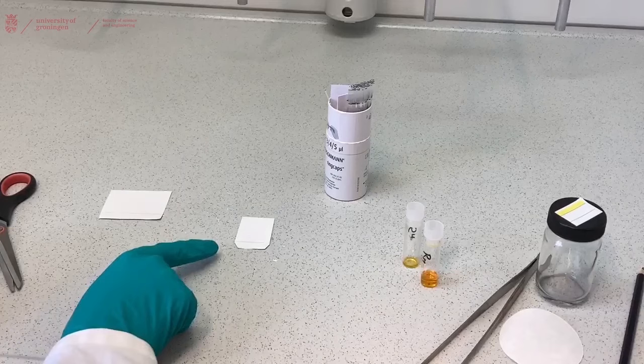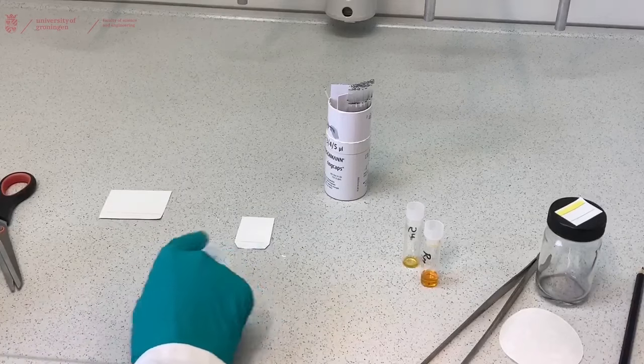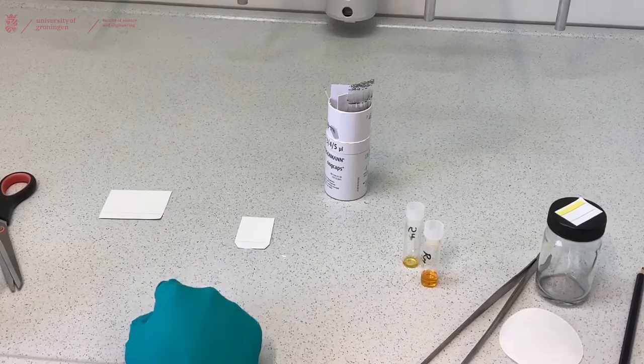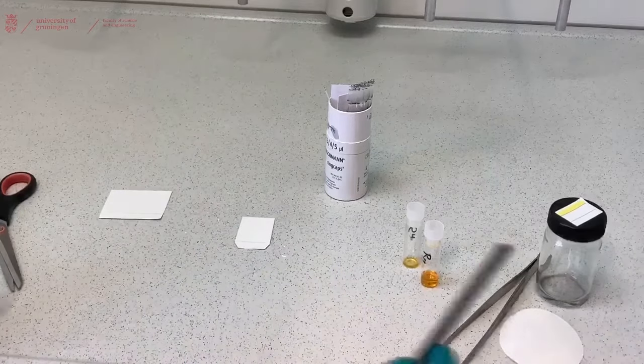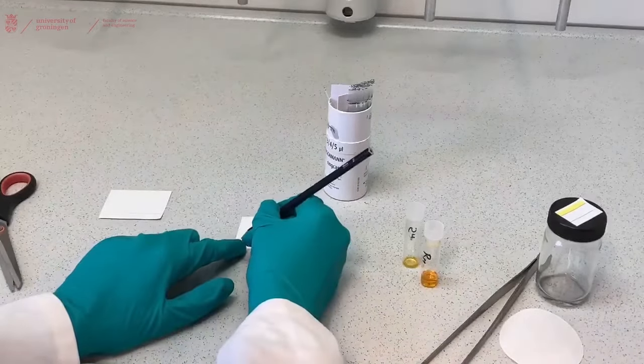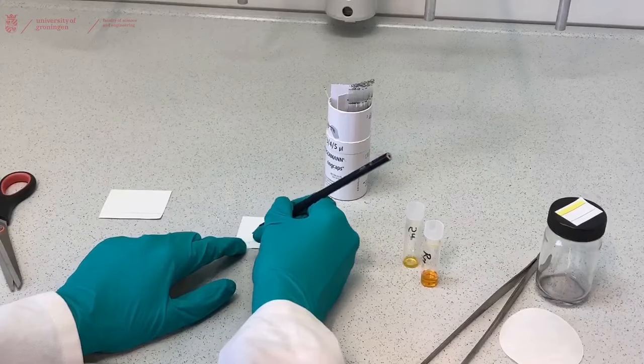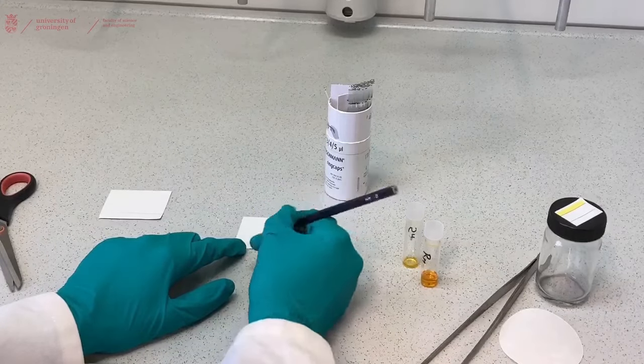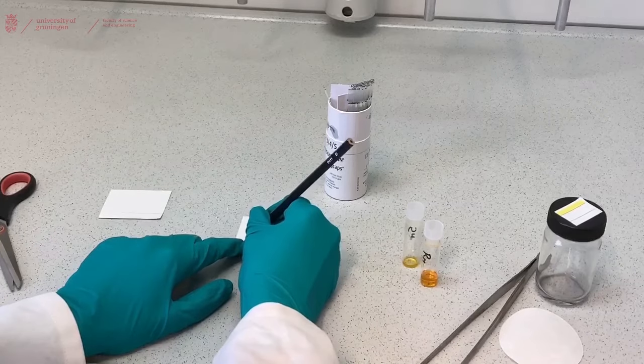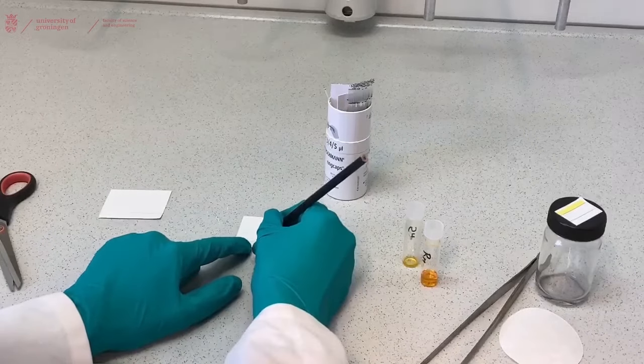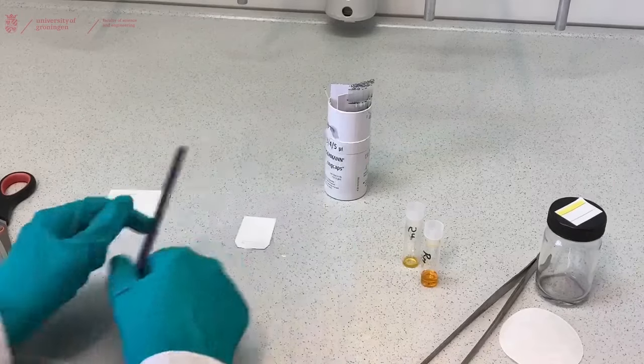We have cut our TLC plate to size, we've cut off the edges and we have a nice straight line. Now we're going to add our starting material and our reaction mixture. Make a small line on the baseline and write down what you're going to place there. So starting material on the left and product or reaction mixture on the right.